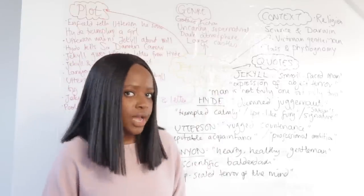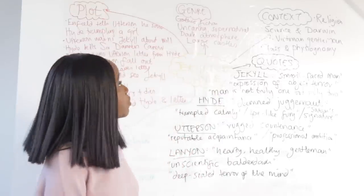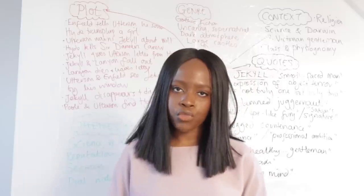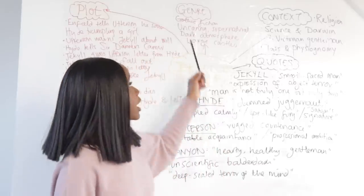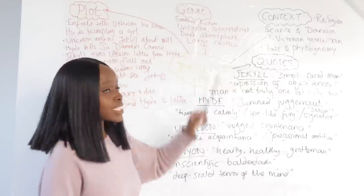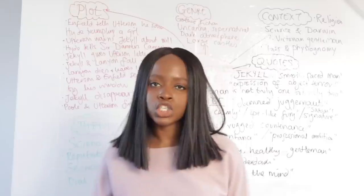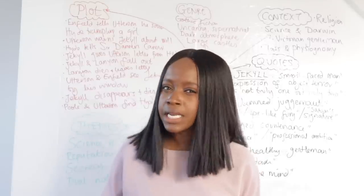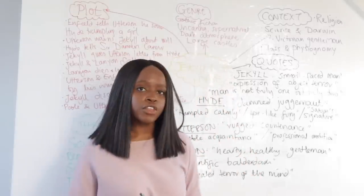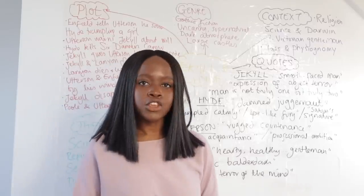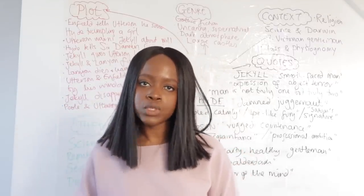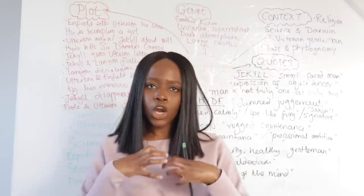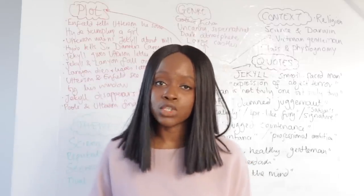Now let's quickly talk about the genre and what genre this novella belongs to. This novella is gothic fiction, and gothic fiction became a really popular genre in the Victorian era — the 1800s. A typical characteristic of gothic fiction is it usually features the uncanny: something really strange and mysterious, but also it features supernatural forces. In Dr. Jekyll and Mr. Hyde, the supernatural element is the fact that Dr. Jekyll is able to use science to transform into a completely different person or alter ego. Another aspect of the gothic fiction genre is the dark atmosphere, and a lot of pathetic fallacy is used — pathetic fallacy is when the weather is used to reflect the mood. This dark atmosphere creates within us as readers a really terrible sense of foreboding.